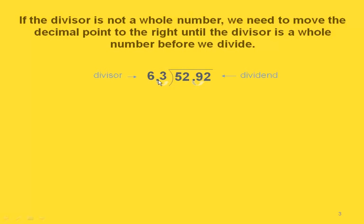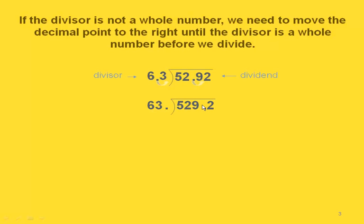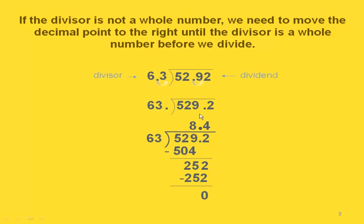If our divisor is 6.3, this is not a whole number, so before we even start dividing we're going to move our decimal point to the right as many times as we need to until we have a whole number. This time we would only need to move it once. When we do that we also have to move the decimal point the same number of places in our dividend. Then we put our decimal point in our quotient right above where it is in our dividend.